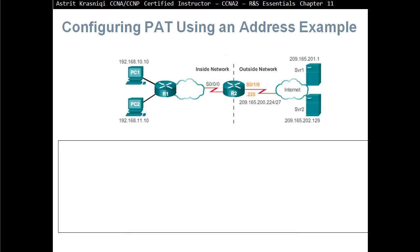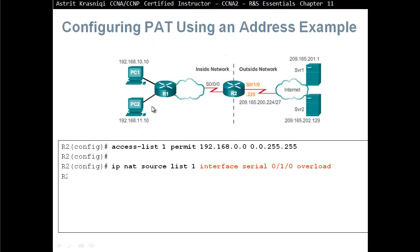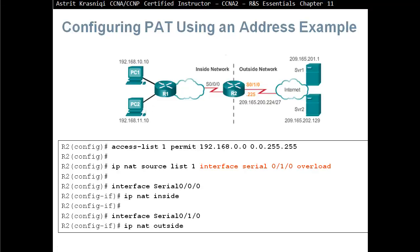Configuring PAT using an interface address: this time we don't create a pool — instead we translate to the IP address on a specific interface. We create an access list permitting both networks, then use 'IP NAT inside source list 1 interface serial 0/1/0 overload'. The 'overload' keyword enables PAT. This approach binds translation to the interface address rather than a pool, which you cannot do with dynamic NAT.